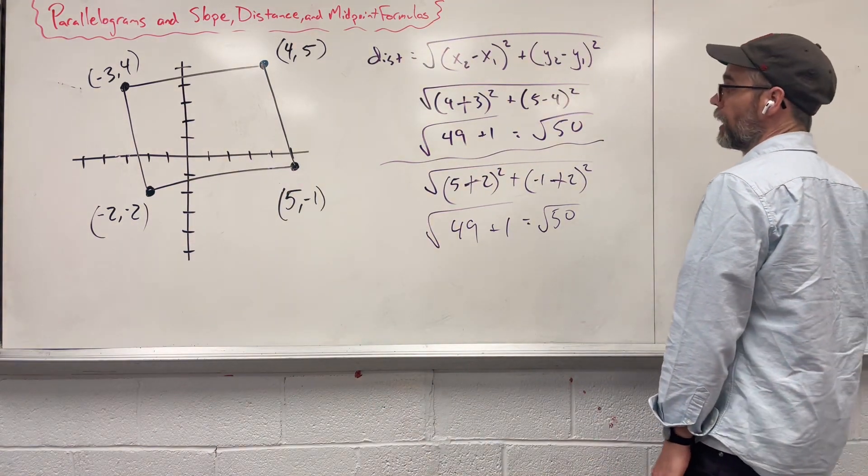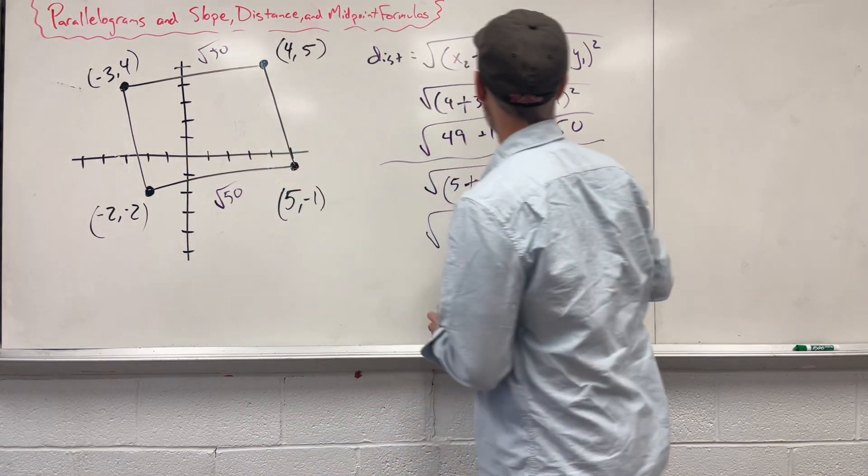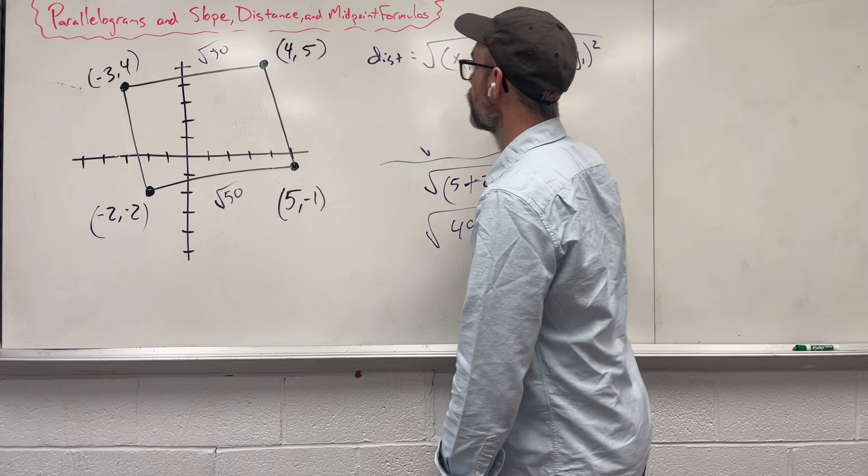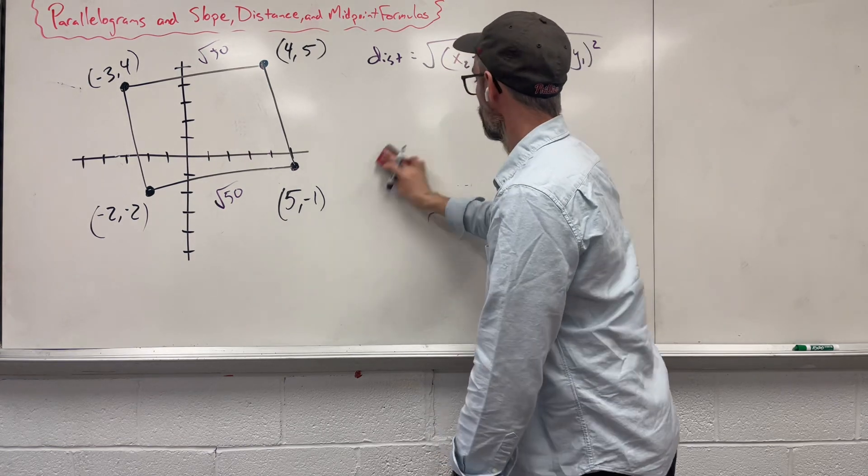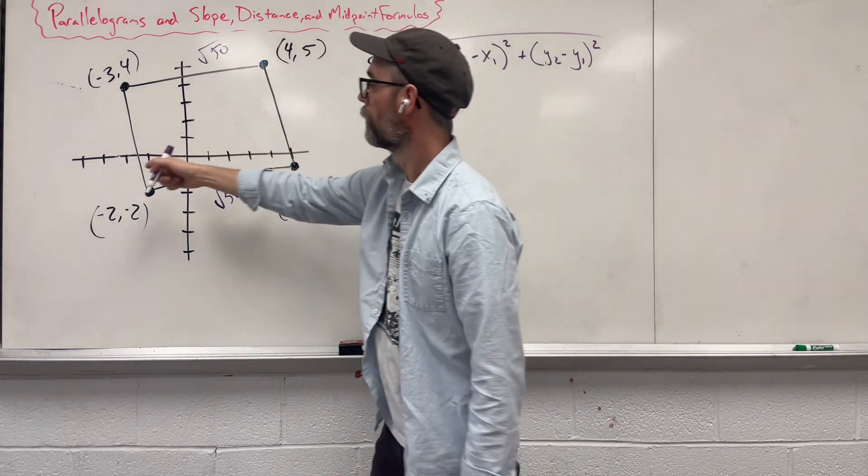We need to do that again, so here, let's write that, square root of 50, square root of 50. Let's check the sides.